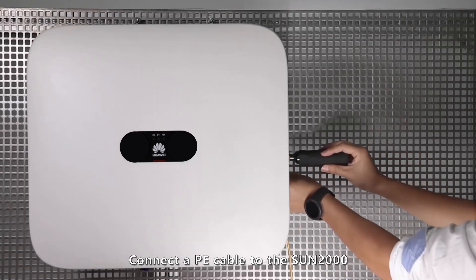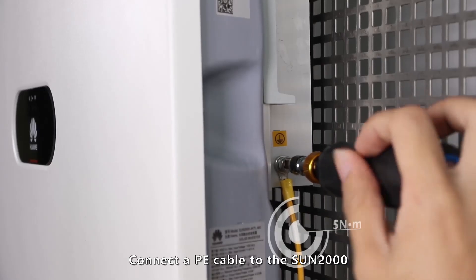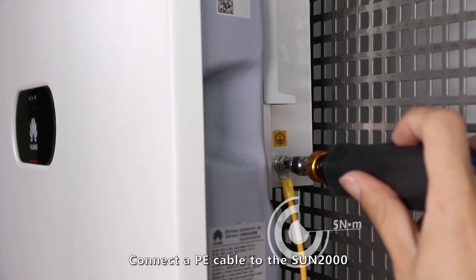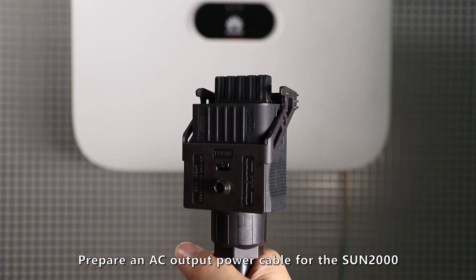Connect a PE cable to the Sun 2000. Prepare an AC output power cable for the Sun 2000.